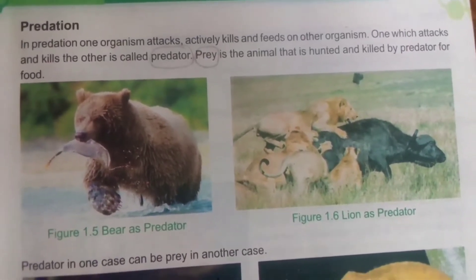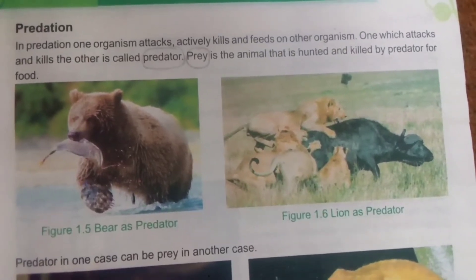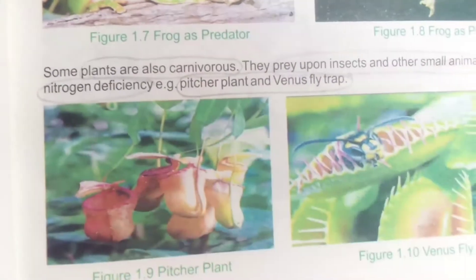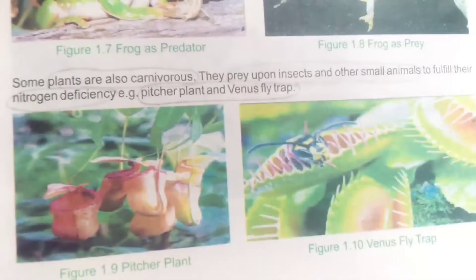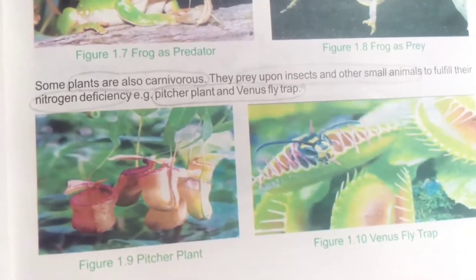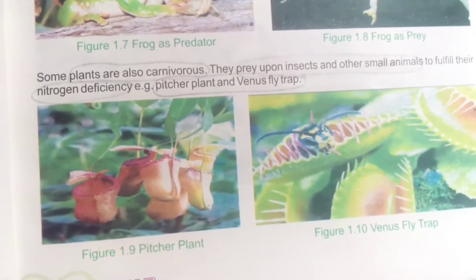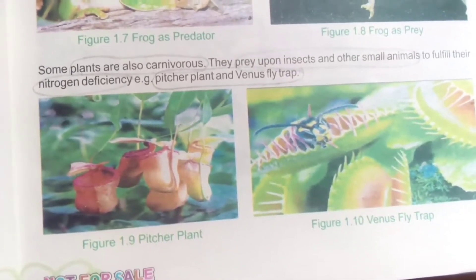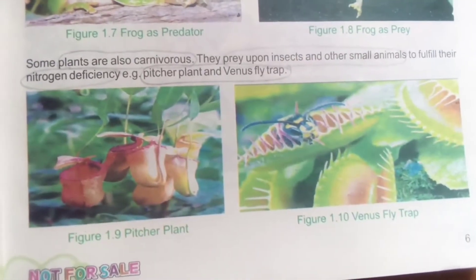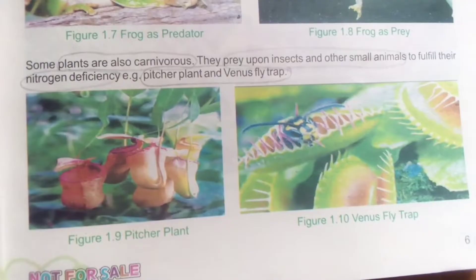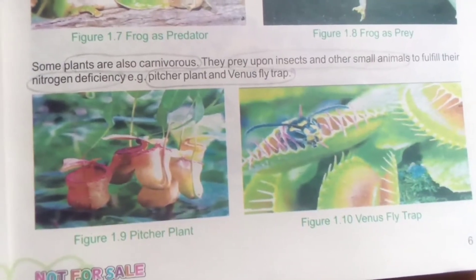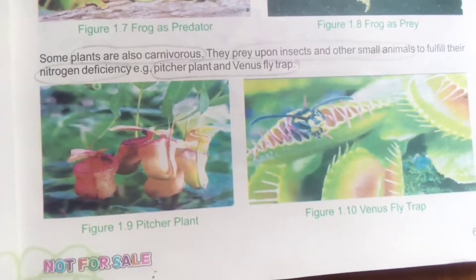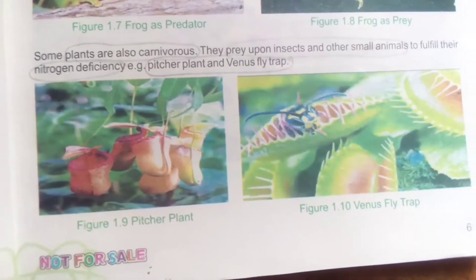The one which attacks and kills the other is called a predator. The prey is the animal that is hunted and killed by a predator for food. Some plants are also carnivores — they prey upon insects and other small animals to fulfill their nitrogen deficiency. You need to remember: pitcher plant and Venus flytrap prey upon insects.